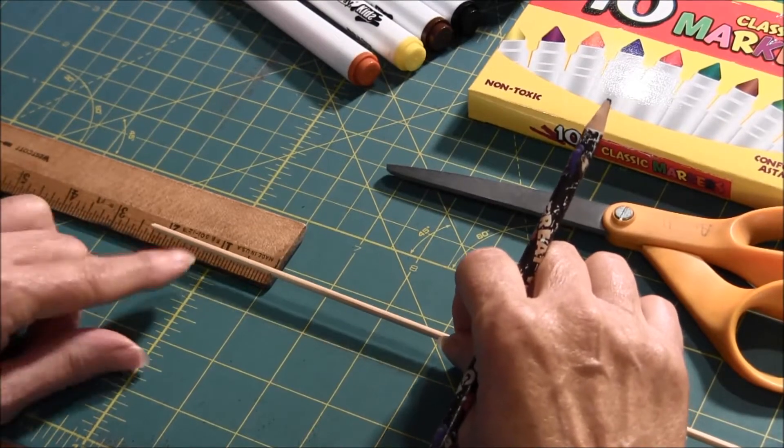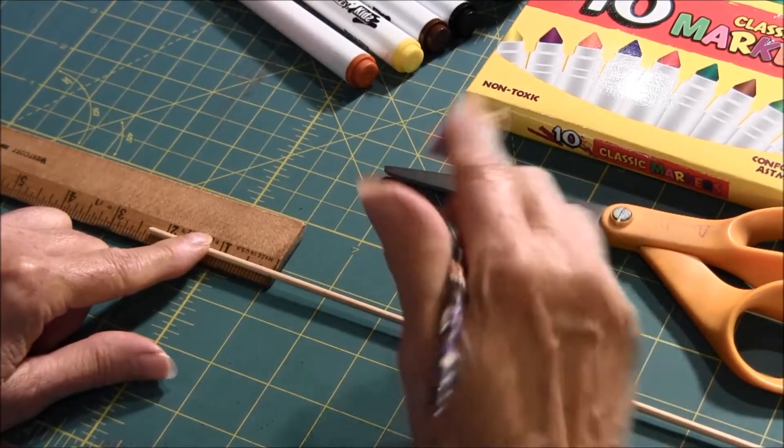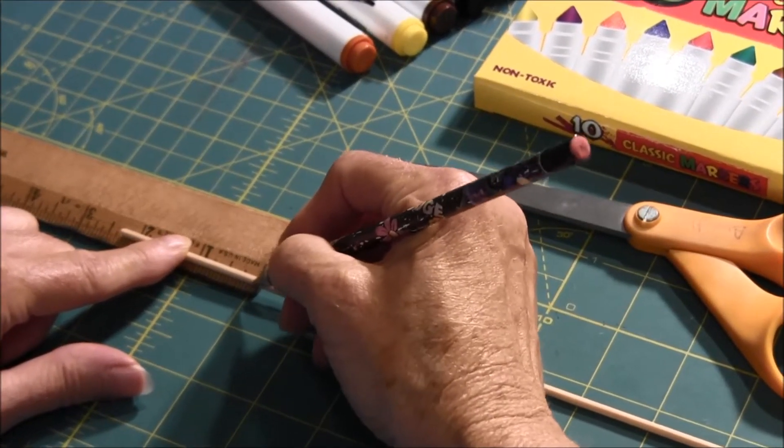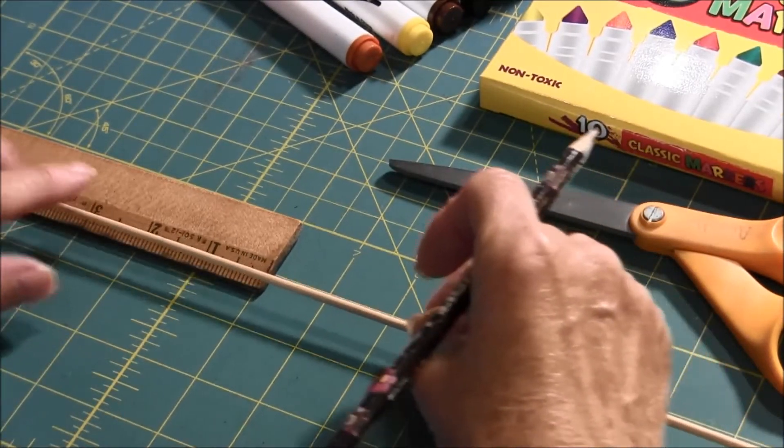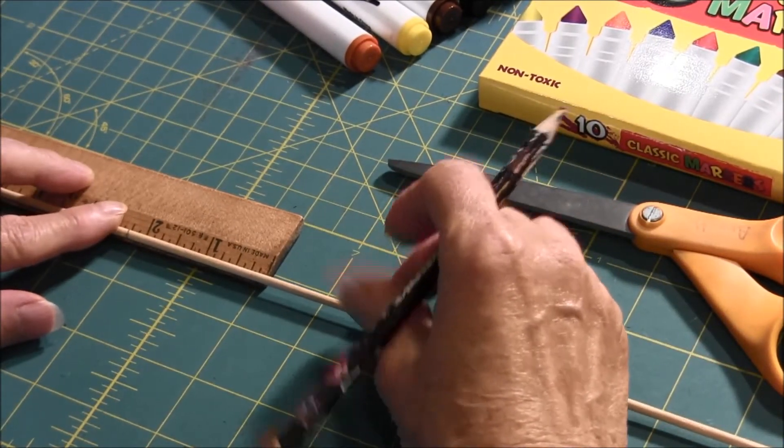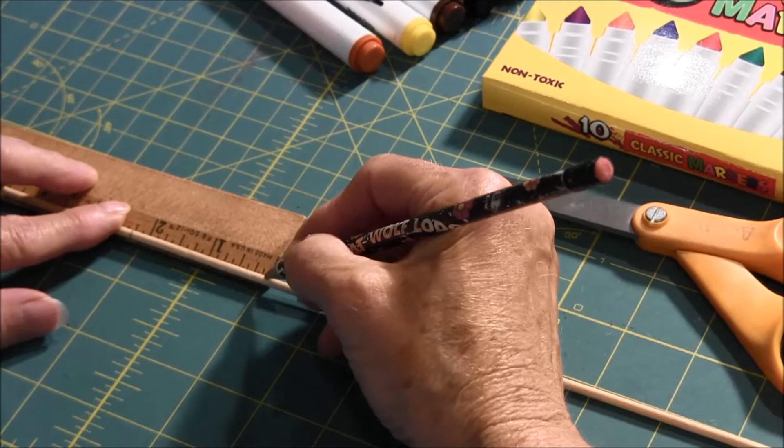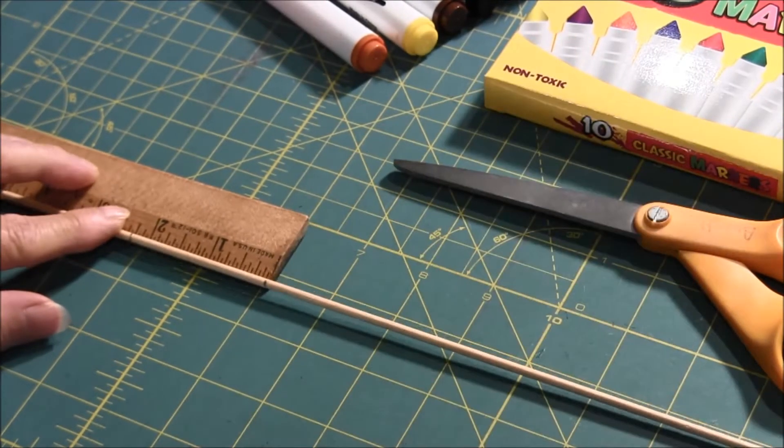The first thing you're going to do is measure the dowel 2 1⁄4 inches. And you can make as many of these as you want. I'm just going to do two to give you the idea today.